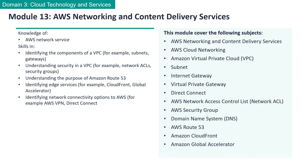In this module, we will cover the following subjects: AWS Networking and Content Delivery Services Overview, AWS Cloud Networking, AWS Virtual Private Cloud or VPC, Subnet, Internet Gateway, Virtual Private Gateway, Direct Connect, AWS Network Access Control List or NACL, AWS Security Group, Overview of Domain Name System or DNS, AWS Route 53, Amazon CloudFront, and Amazon Global Accelerator.